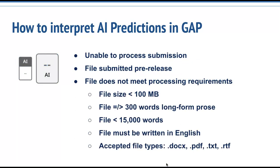If you see a gray icon with no percentage displayed, this indicates the AI writing detector was unable to process the submission. This can occur for several reasons. First, the submission was made before the release of Turnitin's AI detection capabilities — the only way to see the AI writing detection report on historical submissions is to resubmit them. Second, the submission does not meet the file requirements needed to successfully process it. For a submission to generate an AI writing report and percentage, it needs to meet these guidelines: the file size must be less than 100 megabytes, the file needs to have at least 300 words of long-form prose, it must not exceed 15,000 words, it must be written in English, and it must be submitted in an accepted file type — .docx, .pdf, .txt, or .rtf.